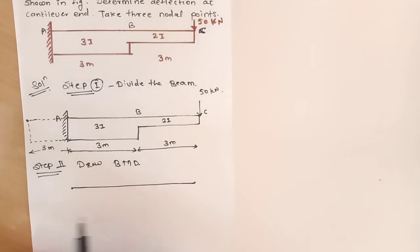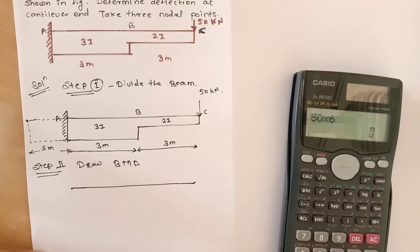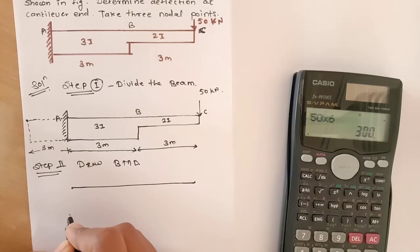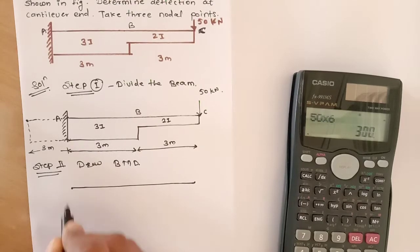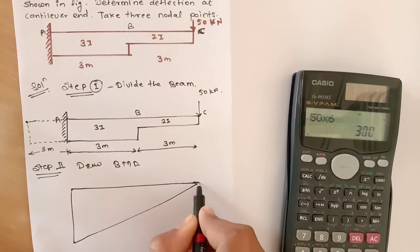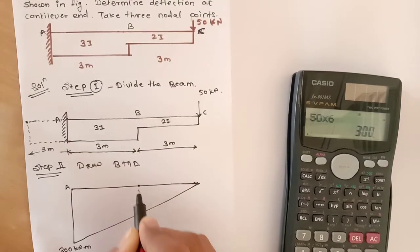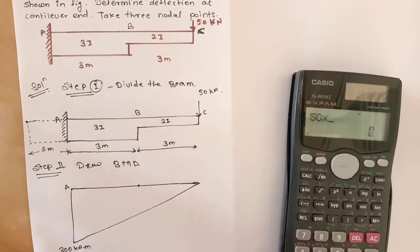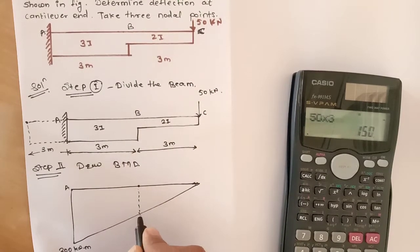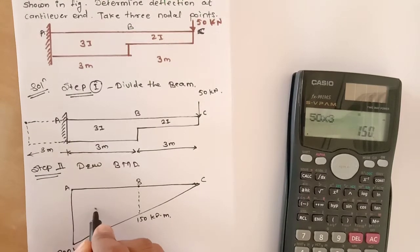In the bending moment diagram, the moment at point A equals 50 kN times the total distance of 6 meters, giving 300 kN·m. The moment at point B equals 50 times 3 meters, giving 150 kN·m. The moment at point C is 0. The sign is negative due to the hogging bending moment.